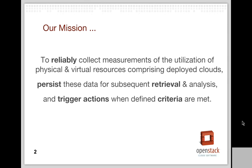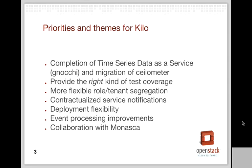A really good example of that would be Heat autoscaling — a mechanism whereby the membership of a group of instances can be dynamically adjusted according to the trend in usage observed for those instances. That's an example where an action is triggered by data collection that Ceilometer is doing, and the actual triggering of the action is driven by a feature of Ceilometer called alarming.